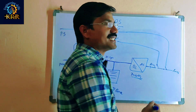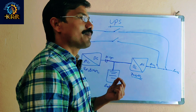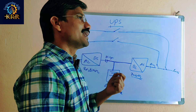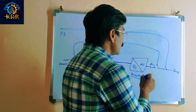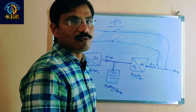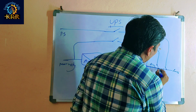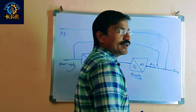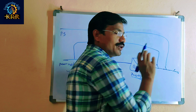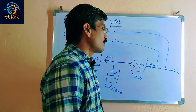After the inverter converts DC to AC, there are AC capacitors on the output side. Some DC ripple is present in the AC output — those capacitors block it, allowing pure AC only to pass through to the load. The power supply then goes to the loads.